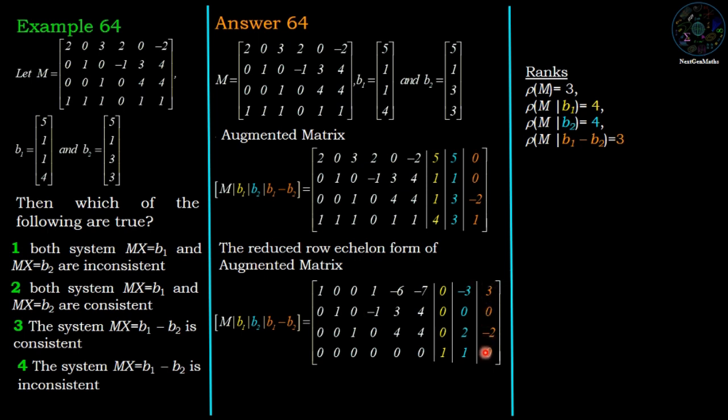And the augmented matrix M with B1 minus B2 has rank 3, because the last entry is 0 in the reduced row echelon form. Now using these ranks, we can say that rank of M not equal to rank of augmented matrix M with B1, therefore the system MX equals B1 is inconsistent.